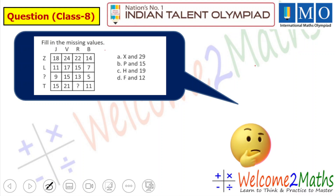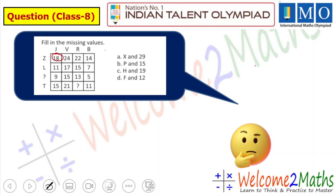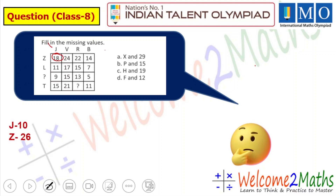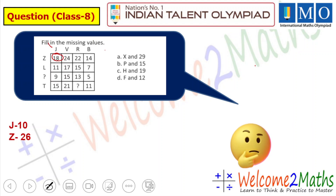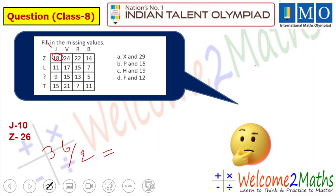Let us find out the first box — here we have 18. How can we get 18? There must be some relation between rows and columns. The first letter here is J. J is the 10th letter of the English alphabet, and Z is the 26th letter. Whenever you add 10 and 26 you get 36, and when you divide 36 by 2 you get 18.